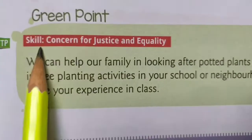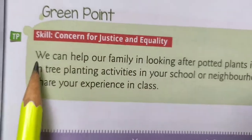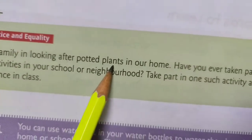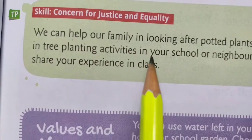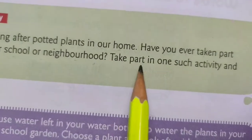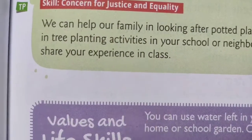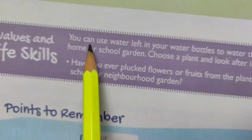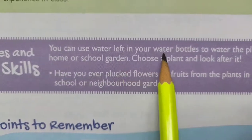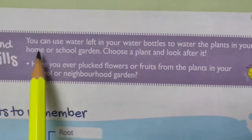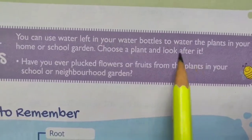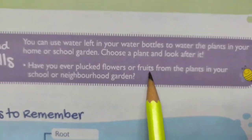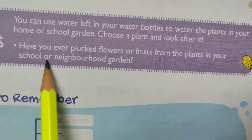Green point — Skill: Concern for justice and equality. We can help our family in looking after potted plants in our home. Have you ever taken part in tree planting activities in your school or neighborhood? Take part in one such activity and share your experience in class. Values and life skills: You can use water left in your water bottles to water the plants in your home or school garden. Choose a plant and look after it. Have you ever plucked flowers or fruits from plants in your school or neighborhood garden?